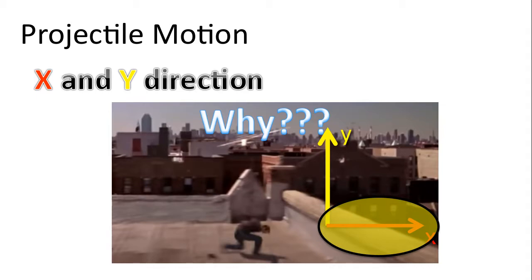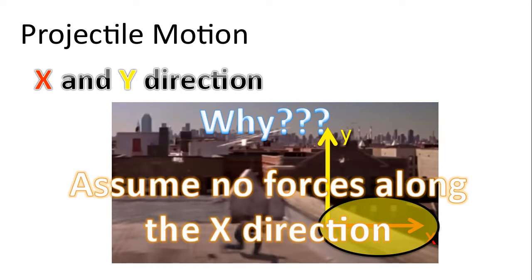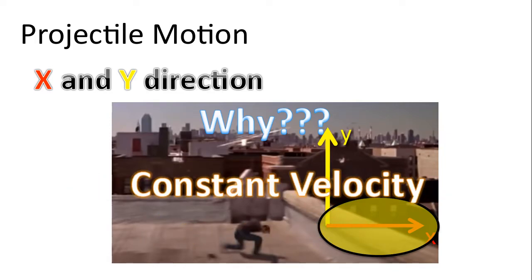The X direction is always set up perpendicular to the Y direction and specifically today we'll note that there are no forces acting in the X direction. And so since we're assuming there's no forces along the X direction, this implies that in the X direction there will be constant velocity.